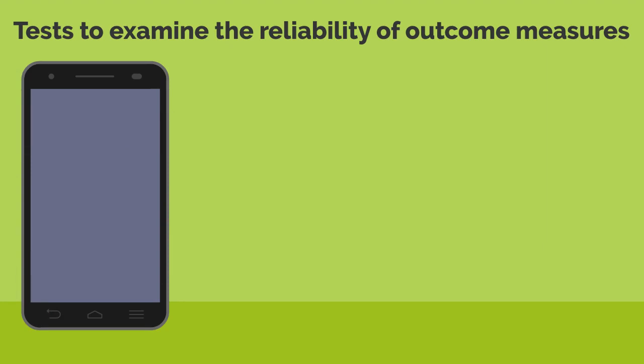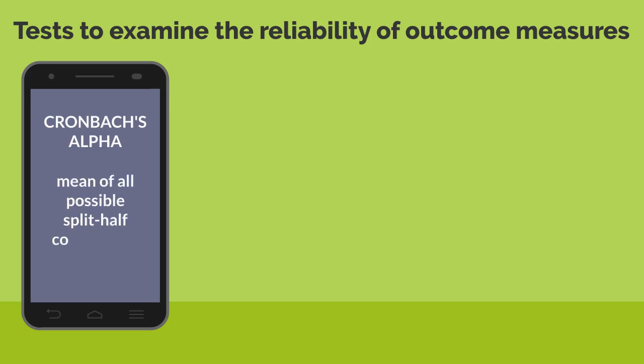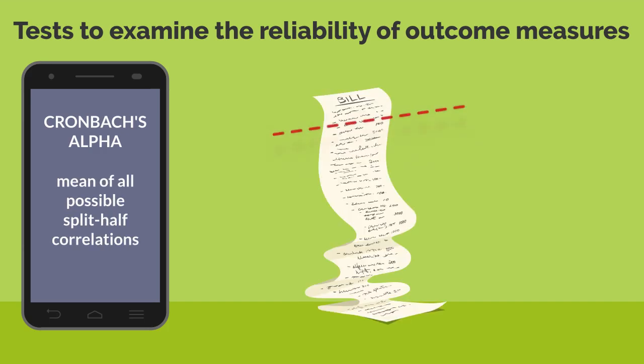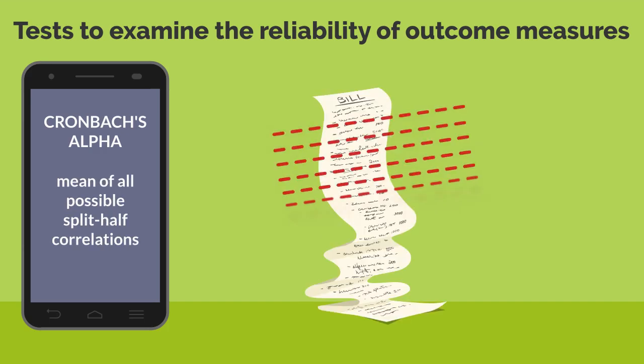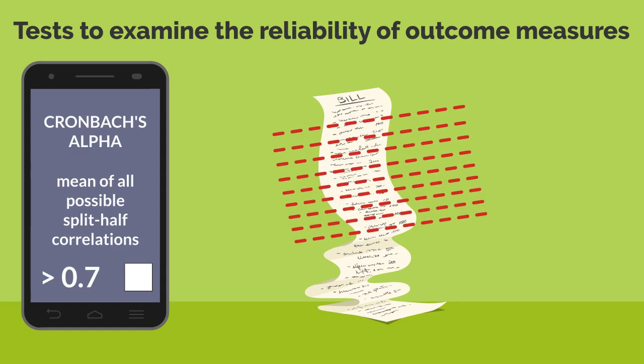An even more fastidious method of looking at internal consistency is Cronbach's alpha, which provides the mean of all possible split-half correlations. Over positive 0.7 is considered good reliability.